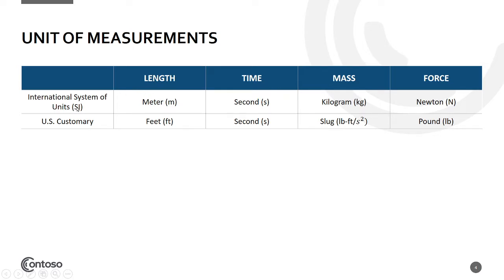There are common units of measurement in two systems. In the International System of Units (SI) or metric system: length is in meters, time in seconds, mass in kilograms, and force in Newtons. In the US Customary or English system: length is in feet, time in seconds, mass in slugs, and force in pounds.